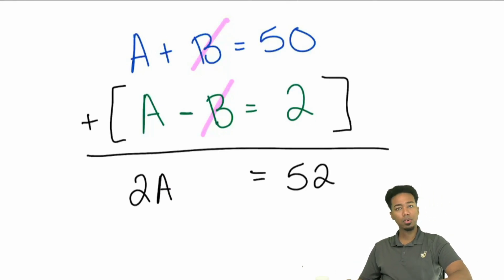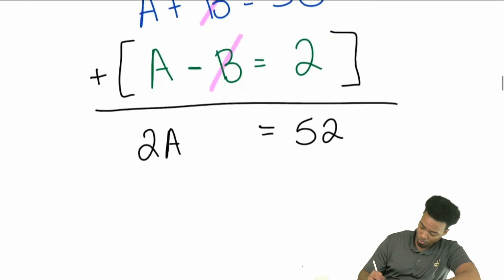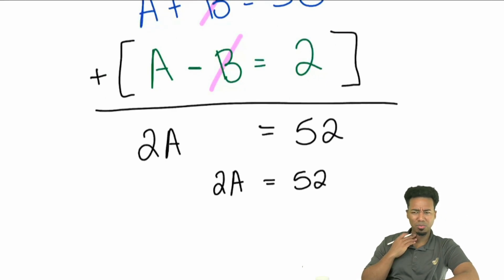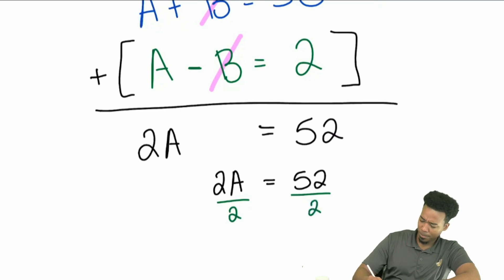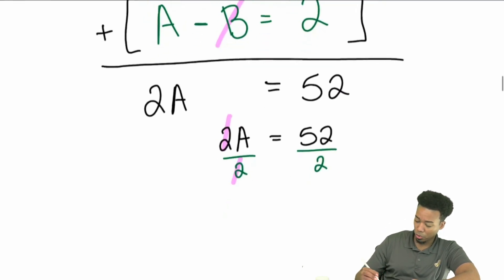Okay. Let's see if we can figure out what A is. If it's 2A equals 52. Well, it kind of looks like I've got to divide 2 on both sides, right? Is that what I'm supposed to do now? That's right. Divide both sides by 2. And we got ourselves A. A equals 26.